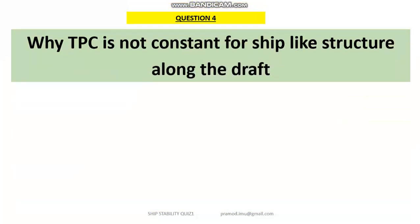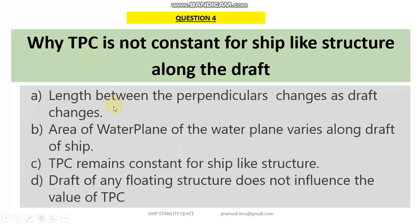Question number 4: why is TPC not constant for a ship-like structure along the draft? As the draft changes, TPC also changes. We know that TPC is dependent on the area of the waterplane, and at different drafts the area of the waterplane will be different. The shape of this area will also be different, and for this reason the value of TPC will be different for different drafts of a given vessel.